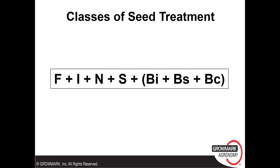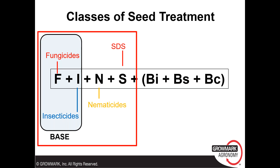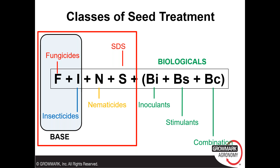There are very many different classes of seed treatments, but I'm only going to be talking about the first four here. We're going to be talking mainly about fungicides and insecticides, which constitute what we know as base seed treatments. We're also going to be reviewing nematicidal seed treatments and fungicide seed treatments targeting sudden death syndrome. There are also some other biological products that mainly work as inoculants or stimulants — we won't cover those today, but some of the nematicidal seed treatments we will discuss do fall into that biological category.